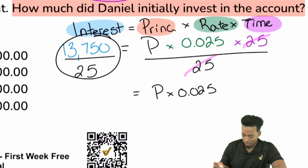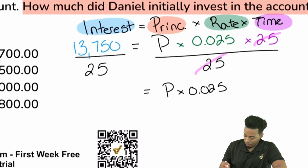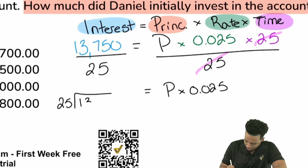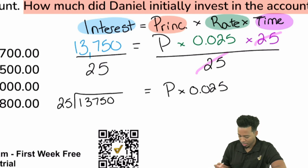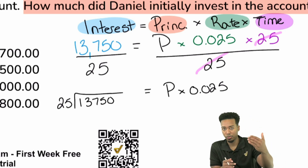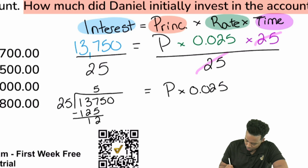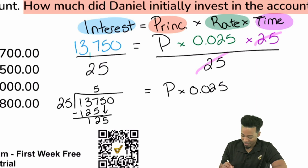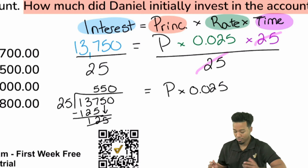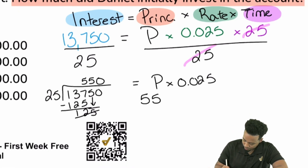Over here this might be a little easier to work through. So right here, 25 into 13,750. 25 doesn't go into 1 or 13, but it does go into 137. We know 25 times 5 is 125, so it goes in there five times. Take away 125 and we have 12 left over — the 5 comes down to make 125 again, that's 5. And then that last zero gives us 550. So we have 550 equals P times 0.025.